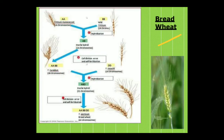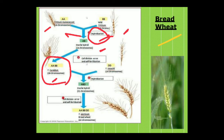Here is the polyploidy procedure of bread wheat. Triticum monococcum and wild Triticum are taken, both giving 14 chromosomes, and hybridization is performed. This produces an AB sterile hybrid with 14 chromosomes, which can be used to produce T. turgidum containing 28 chromosomes. Further cell division errors and fertilization events give rise to an ABD sterile hybrid with 21 chromosomes, and finally AABBDD — bread wheat — containing 42 chromosomes. This is how polyploidy occurs in the bread wheat plant.